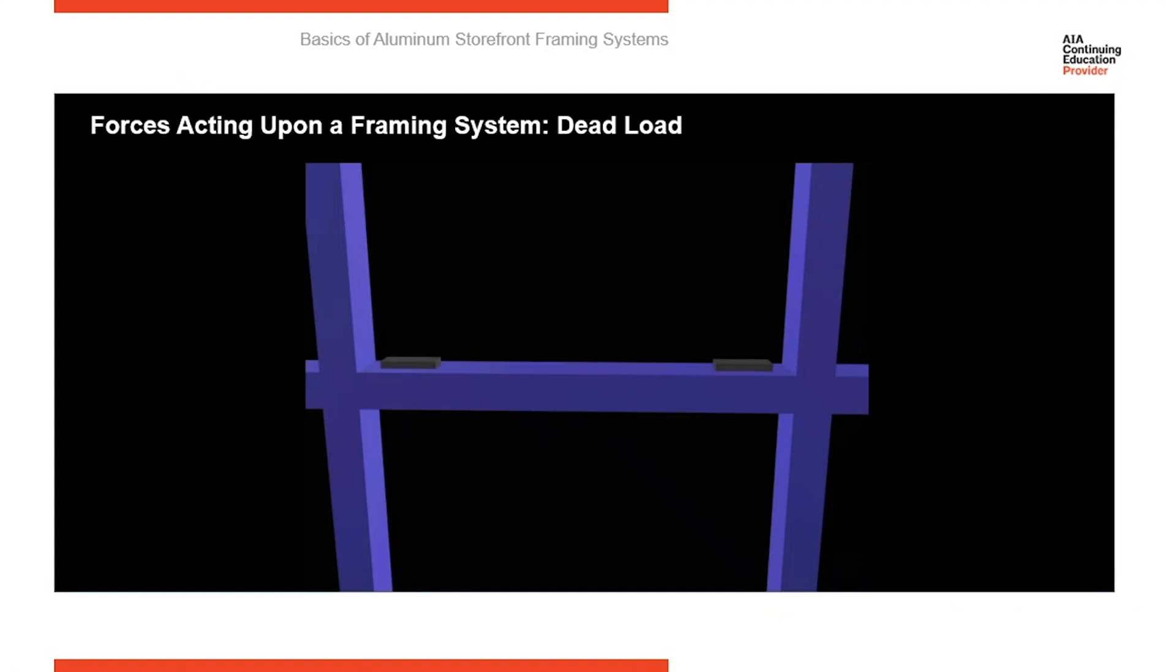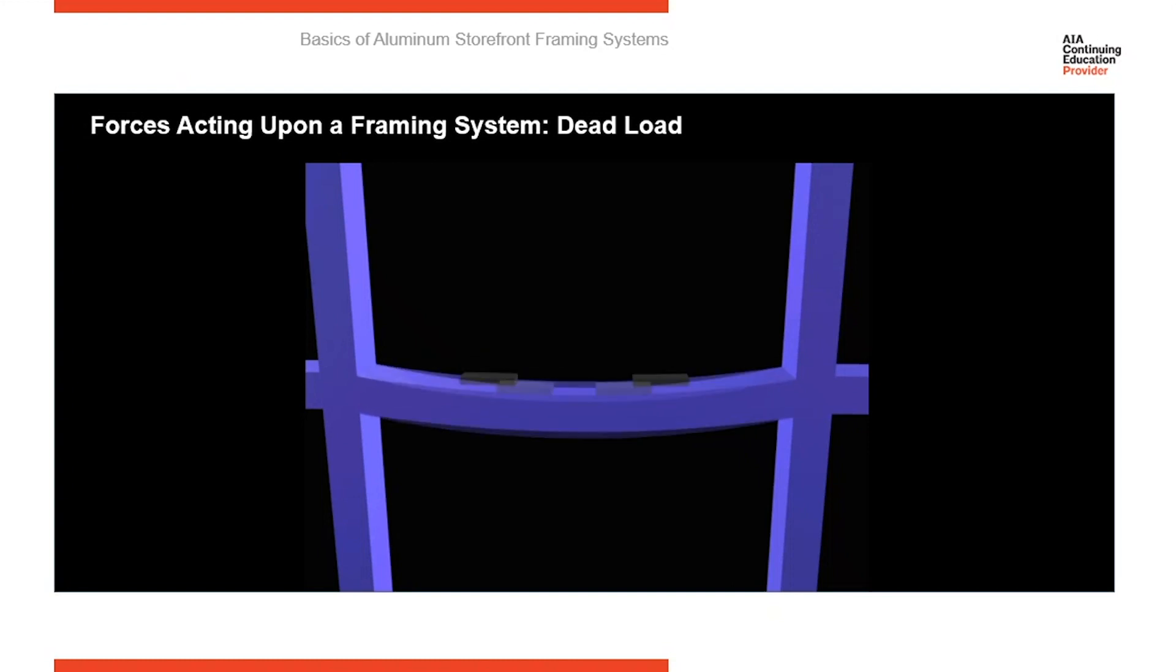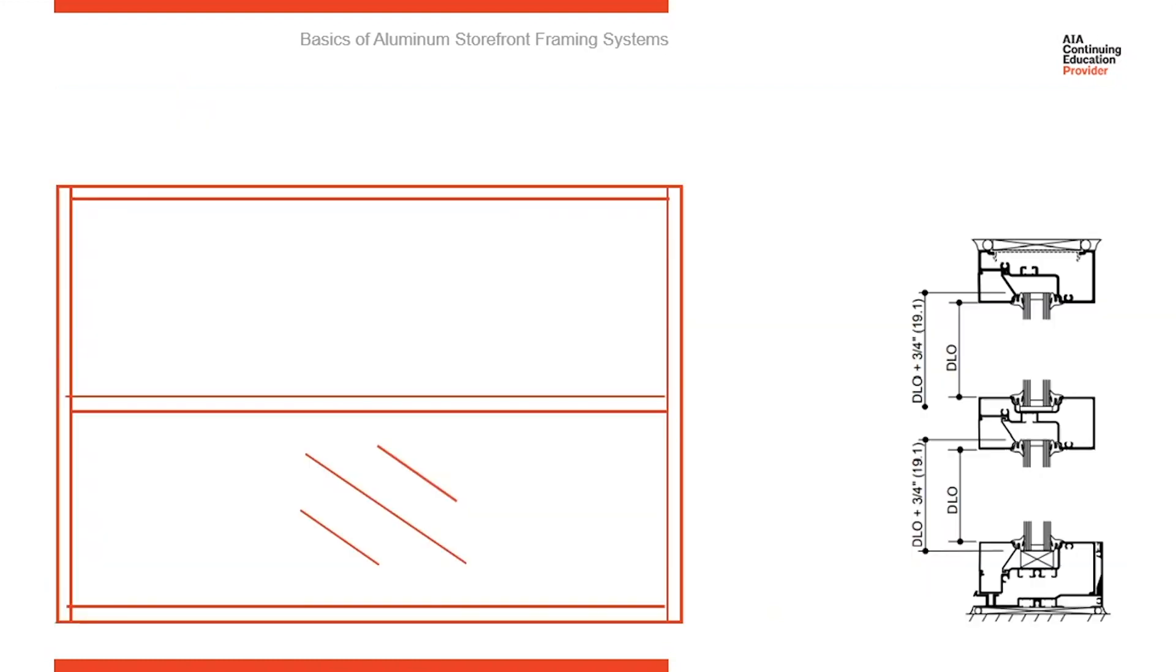Here you can see a horizontal with the setting blocks toward the ends, close to the verticals. As we move the setting blocks to the center, notice how the horizontal starts to deflect more. So the glass fabricators want us to start with the setting blocks at quarter points. And then if it still causes deflection, we can evaluate and relocate that.